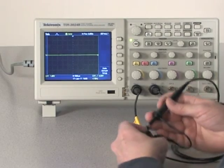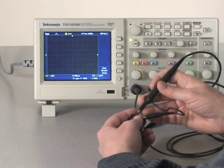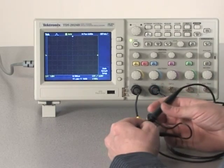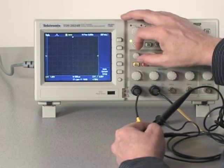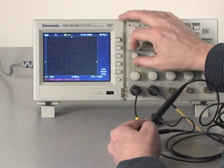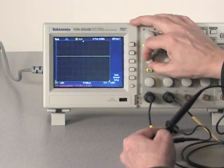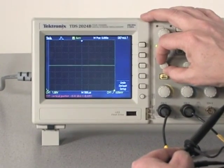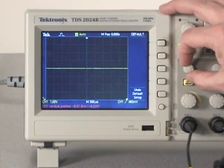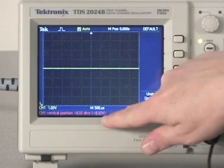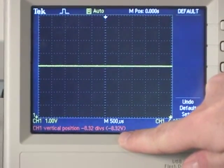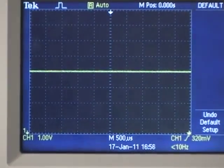I connect my probe up to this nine volt battery that I'm using for demonstration. And then I bring the trace down, back down to the center of the screen, and you can see the voltage across the battery is reading out on the vertical position display. It's about 8.3 volts.